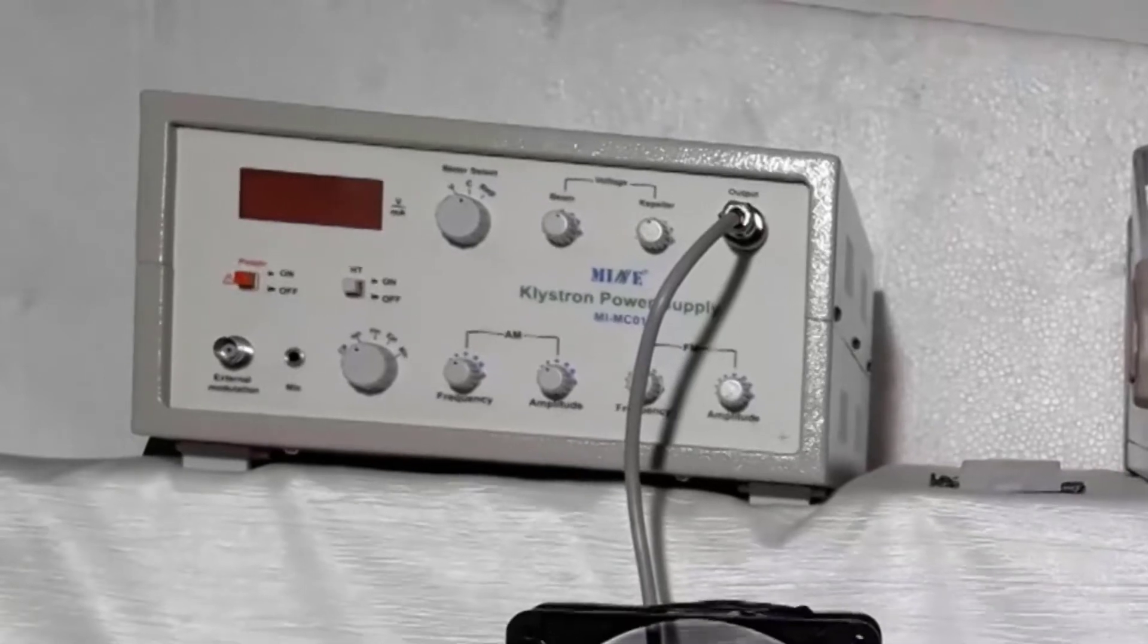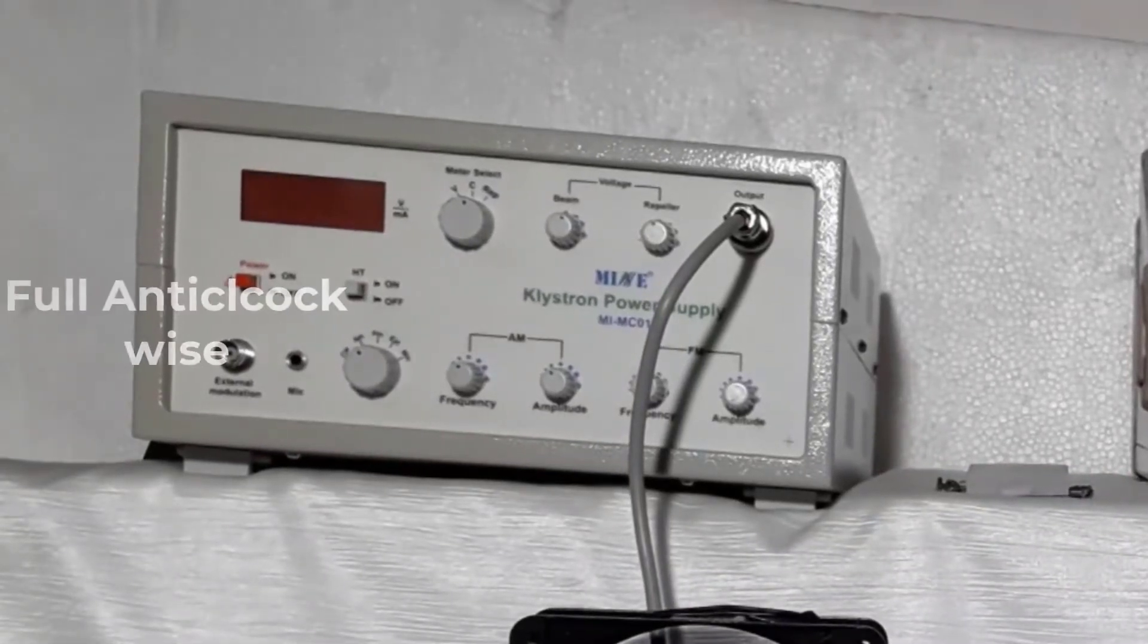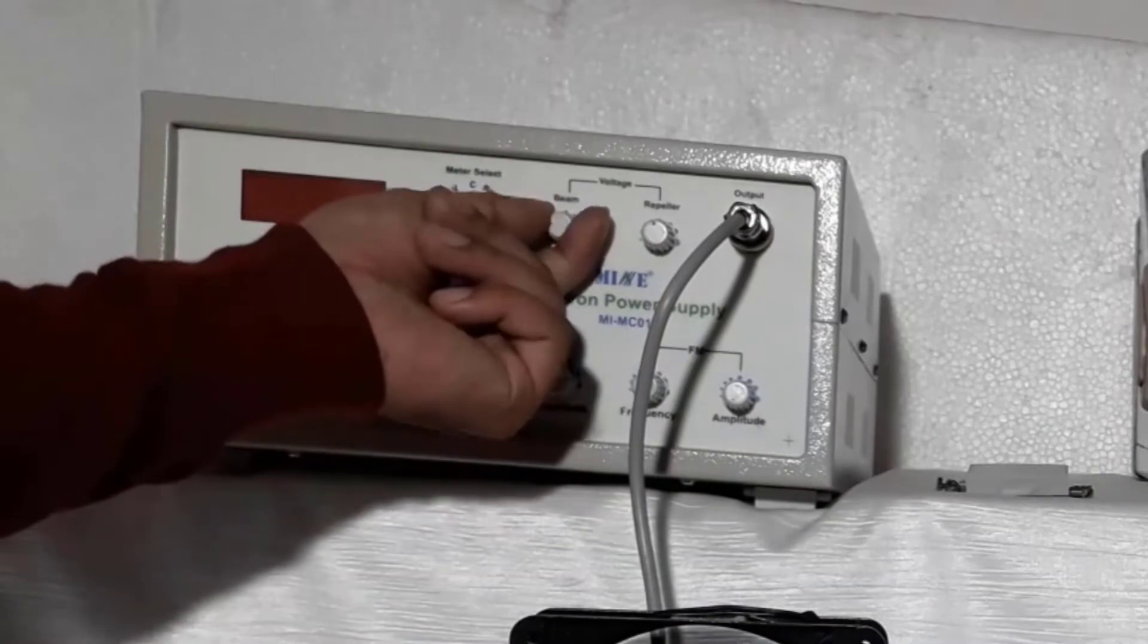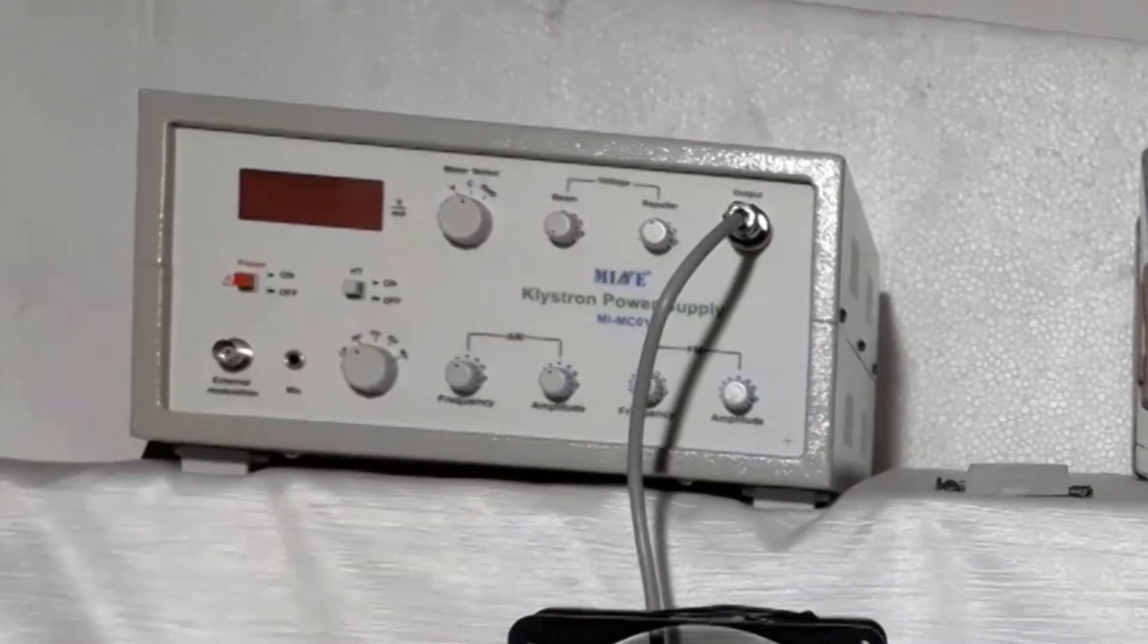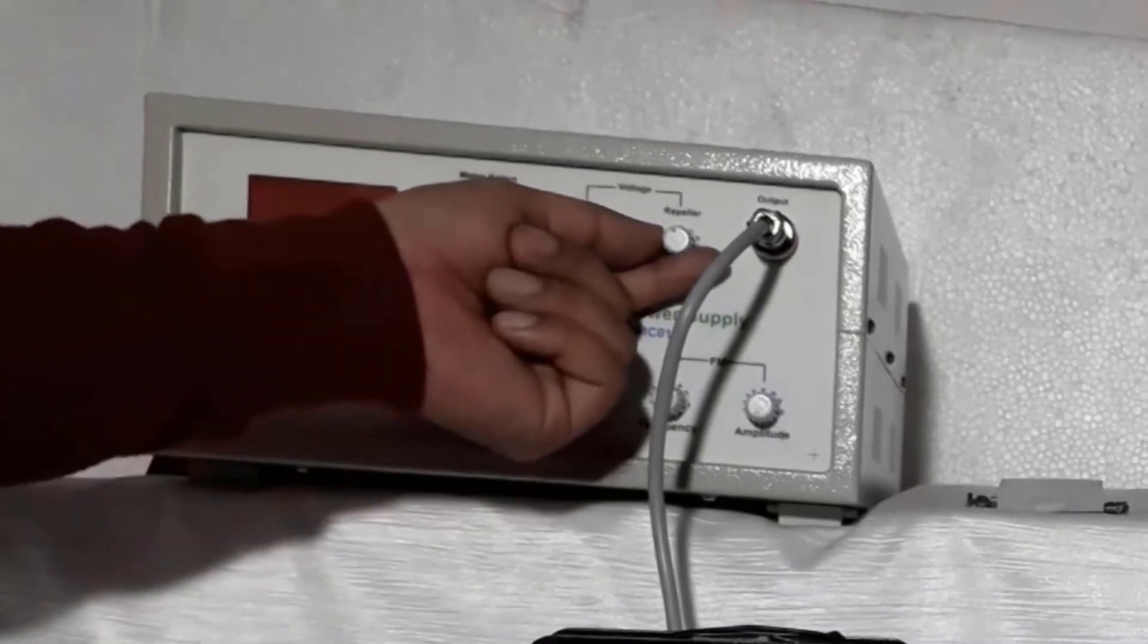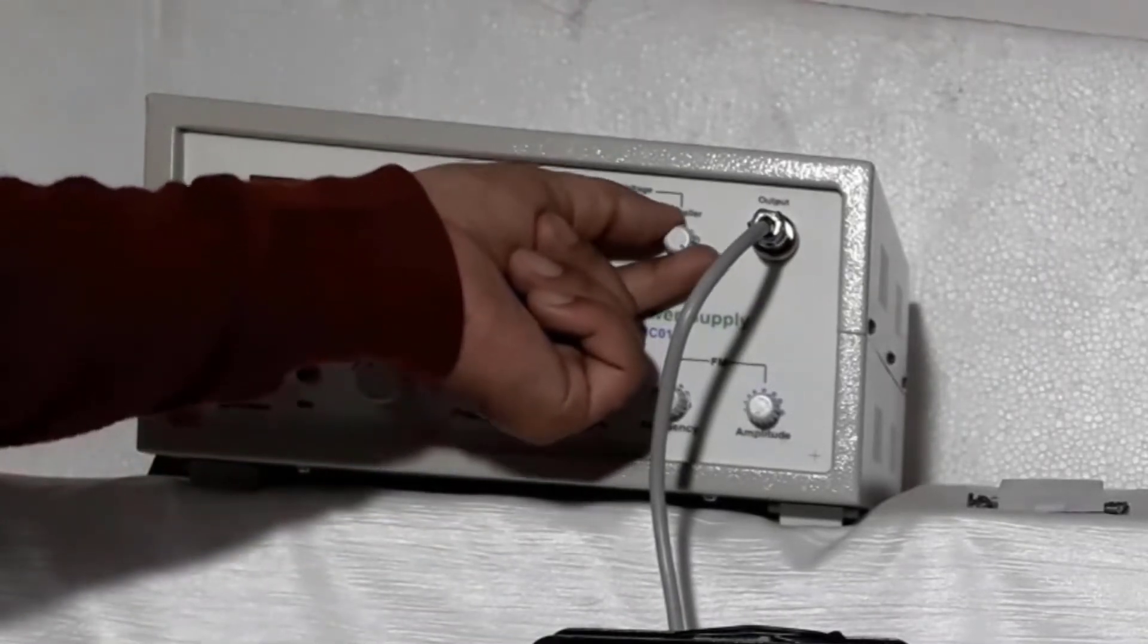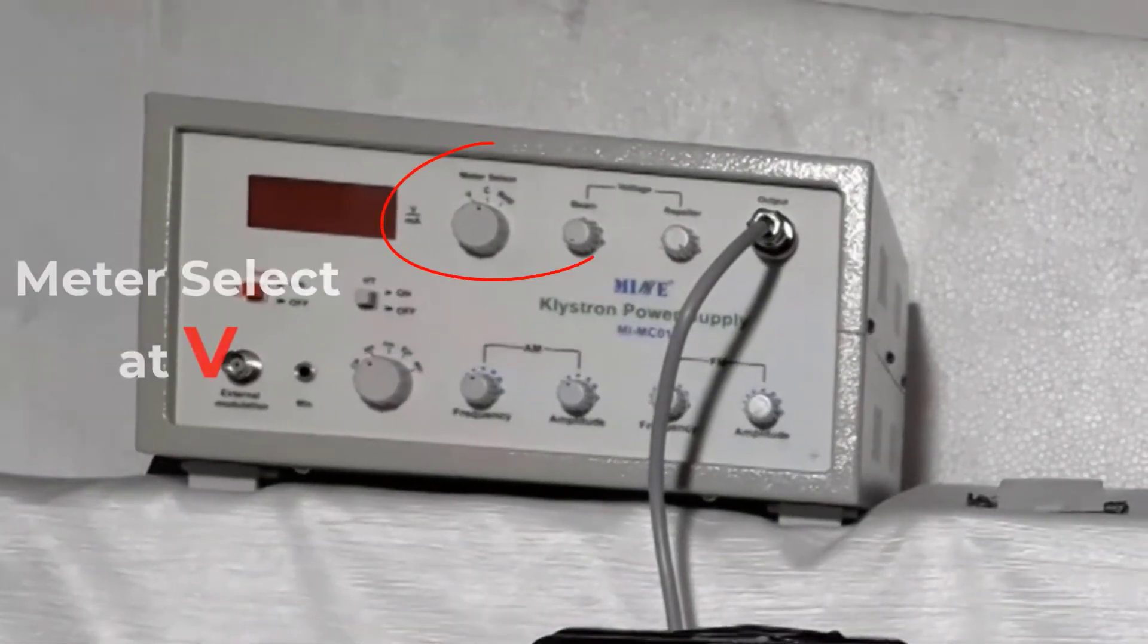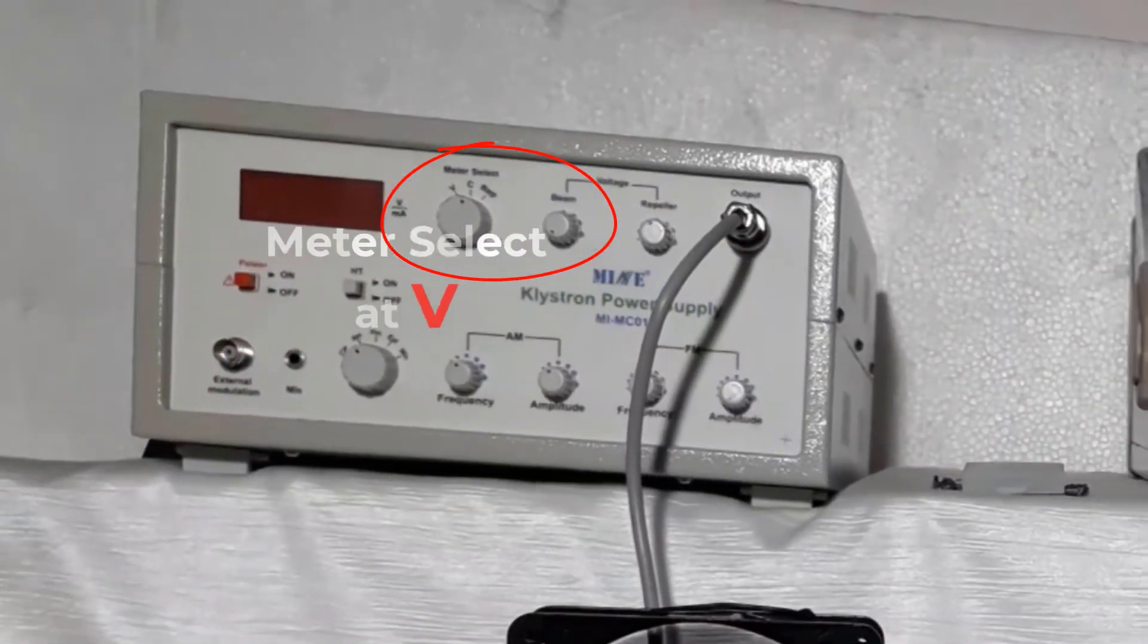Set beam voltage knob at fully anticlockwise. Set repeller voltage knob at fully clockwise position. Set meter select knob at V, that means beam voltage.